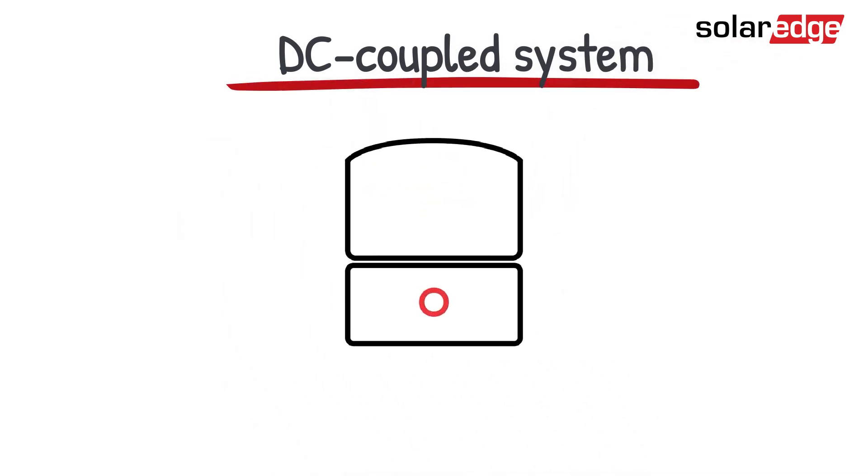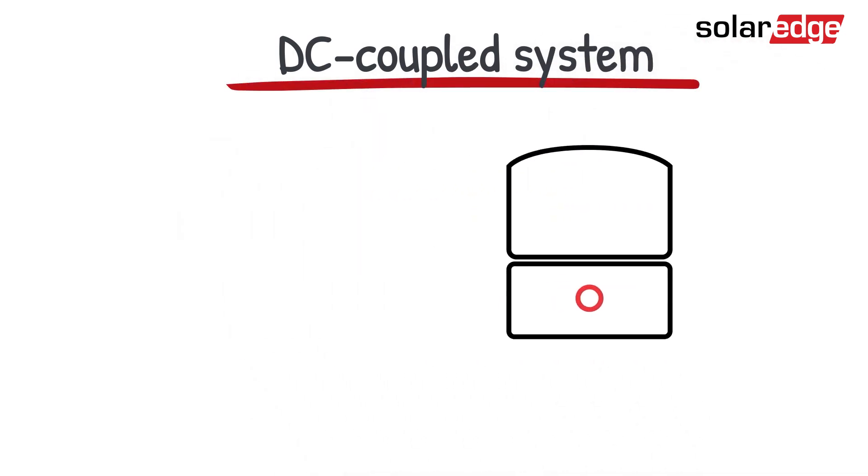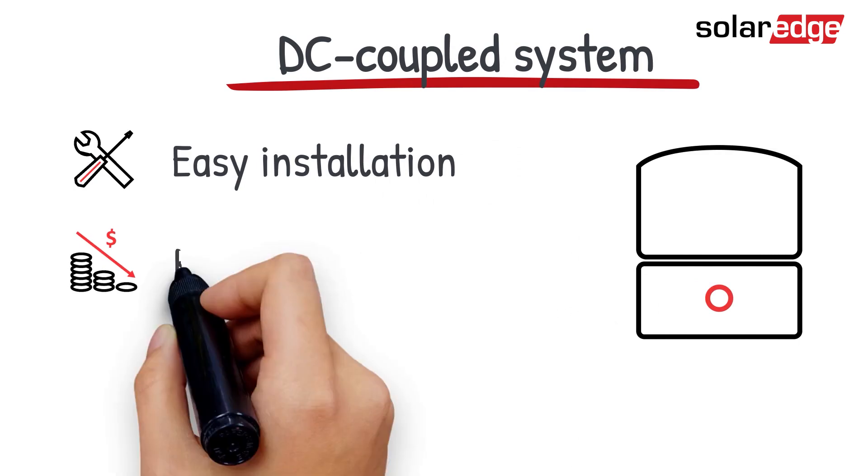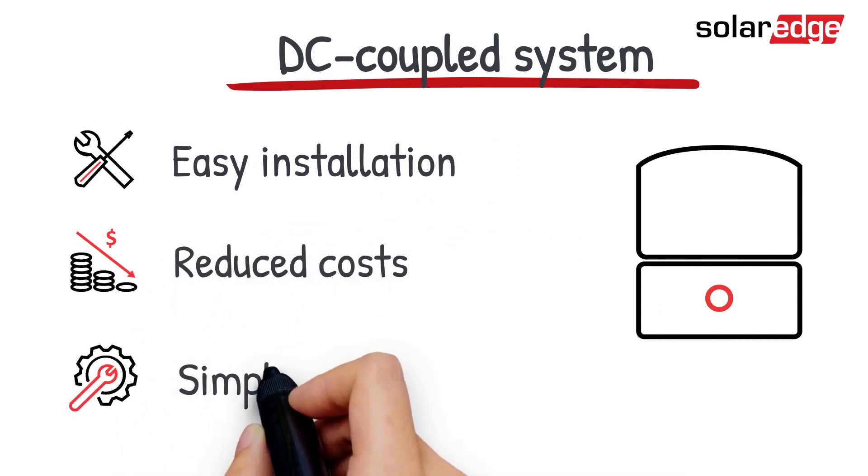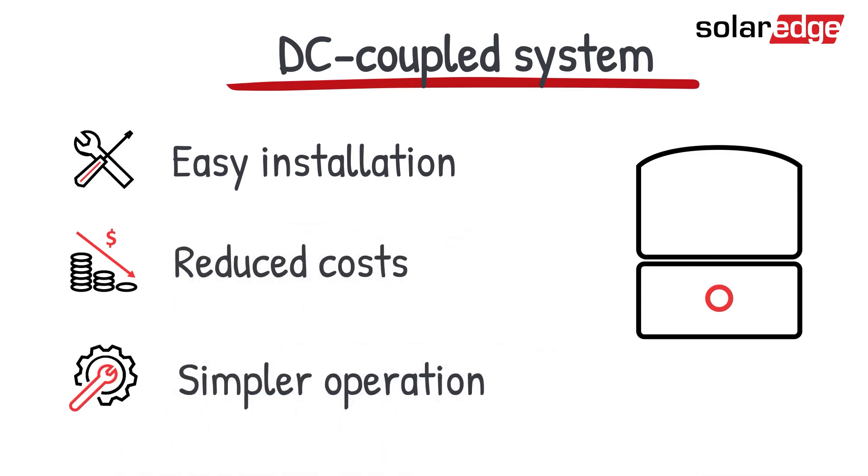With a DC coupled system, only one solar inverter is required. This facilitates installation, reduces hardware costs, and makes the operation of the whole system more economical and efficient.